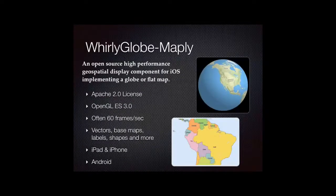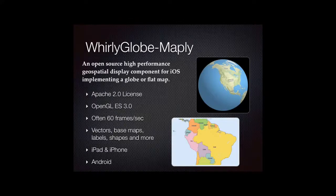I make the WhirlyGlobe Maply toolkit, which is a high-performance geospatial display toolkit for iOS and Android. It's used on iPhones, iPads, and Android devices for maps and 3D globe displays. It has an Apache 2.0 license, so it's pretty free to use. It's based on OpenGL ES 3.0, which basically means it's fast — it can often achieve 60 frames per second on mobile devices. It does a wide variety of things including displaying vectors, base maps, labels, shapes, and things of that nature.